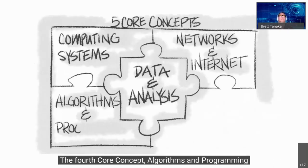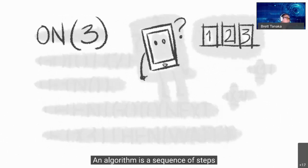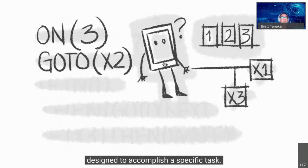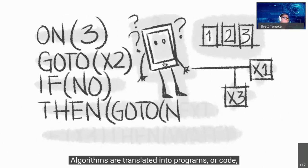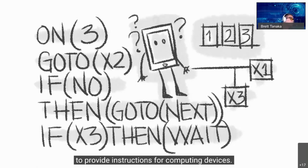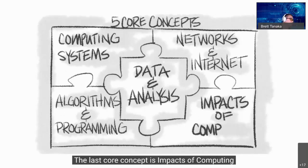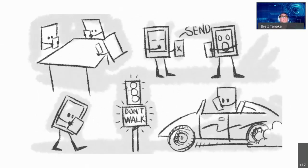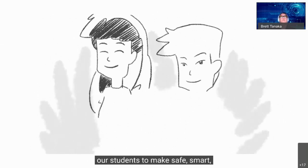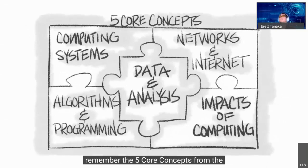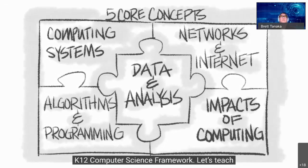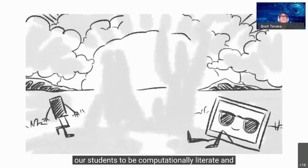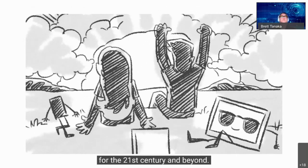The fourth core concept, algorithms and programming, includes algorithms, variables, control, modularity, and program development. An algorithm is a sequence of steps designed to accomplish a specific task; algorithms are translated into programs or code to provide instructions for computing devices. The last core concept is impacts of computing, which includes culture, social interactions, safety, law, and ethics. Practicing good digital citizenship empowers students to make safe, smart, and ethical decisions. Remember the five core concepts from the K-12 computer science framework — let's teach our students to be computationally literate for the 21st century and beyond.